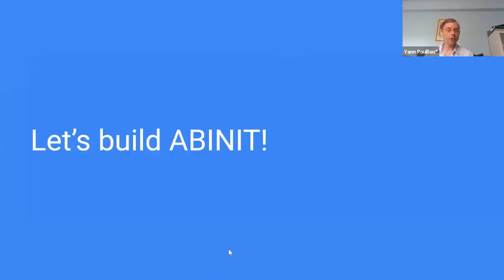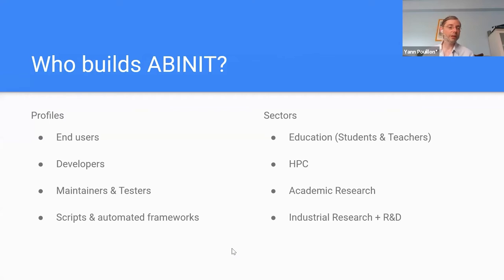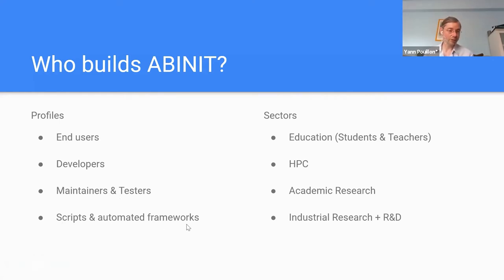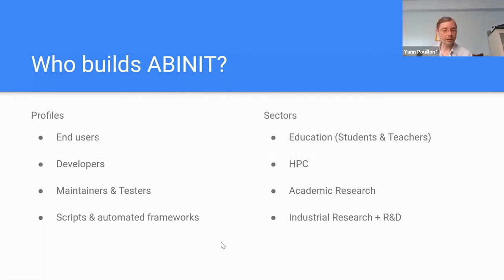Regarding where the build system is going, the interface is defined through two kinds of categories. First, profiles: end users, developers, maintainers and testers, and scripts and automated frameworks — scripts are now considered fully as users. Second, sectors: education, HPC (which is the main one), academic research, and industrial research and R&D, which is one of the topics I'm also covering at Simune.